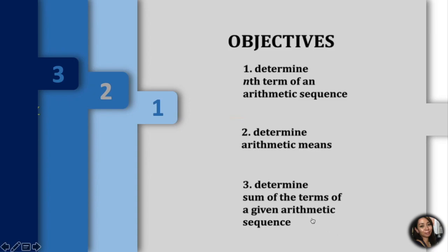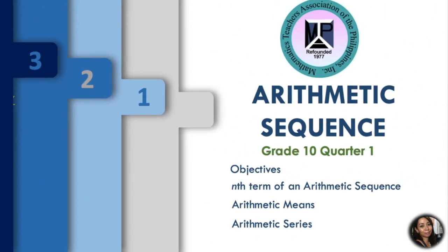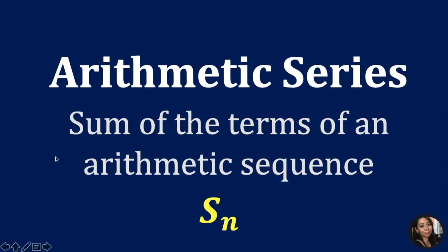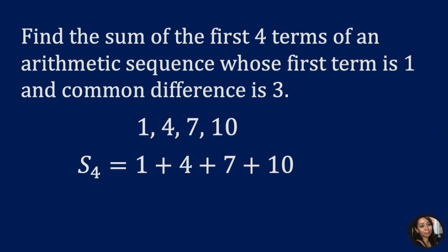The sum of the terms of an arithmetic sequence is what we call an arithmetic series, denoted by capital S subscript n. Let's solve this problem: find the sum of the first four terms of an arithmetic sequence whose first term is 1 and the common difference is 3. Let's write down the sequence, and since we are looking for the sum, we simply add the numbers. Our S sub 4 here is equal to 22.